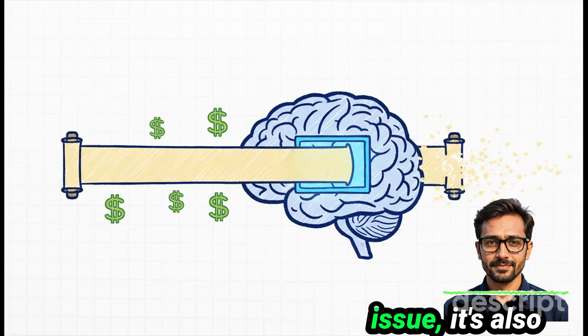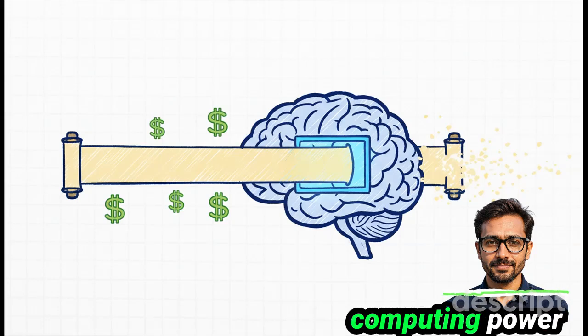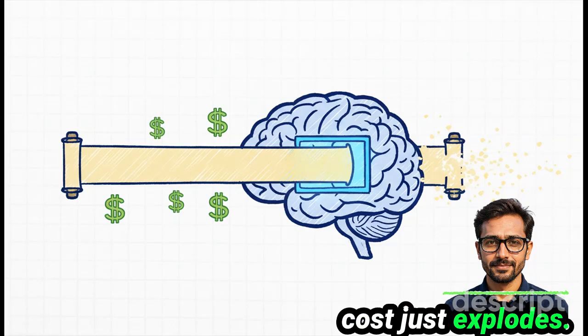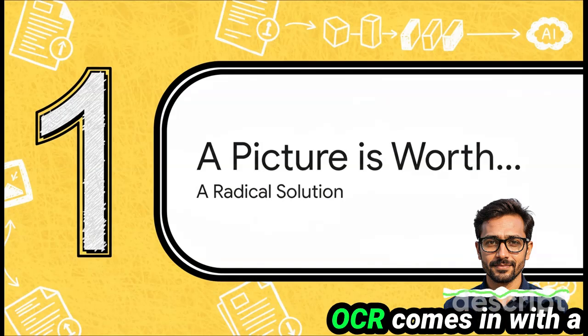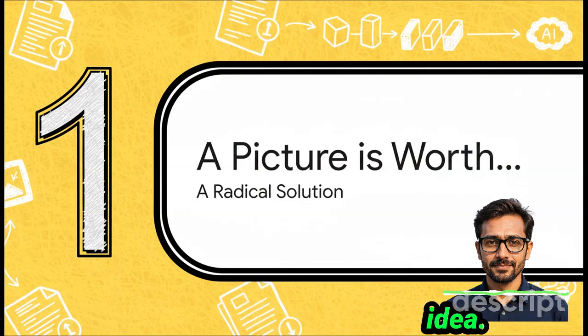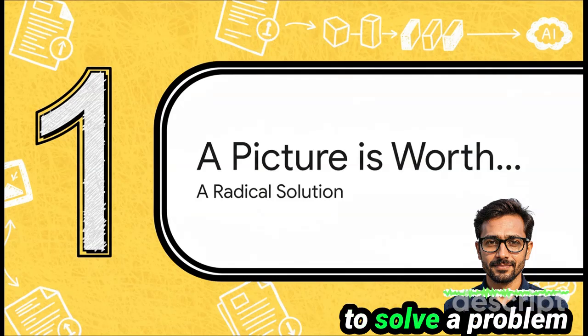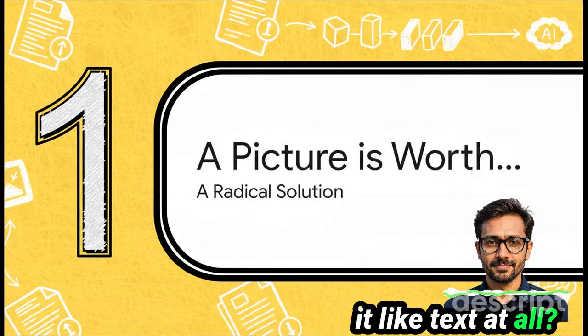And it's not just a memory issue. It's also crazy expensive. The more text you feed it, the more computing power it needs. And that cost just explodes. Okay. So this is where a new model called DeepSeek OCR comes in with a totally brilliant kind of counterintuitive idea. What if the best way to solve a problem with long text is to stop treating it like text at all?